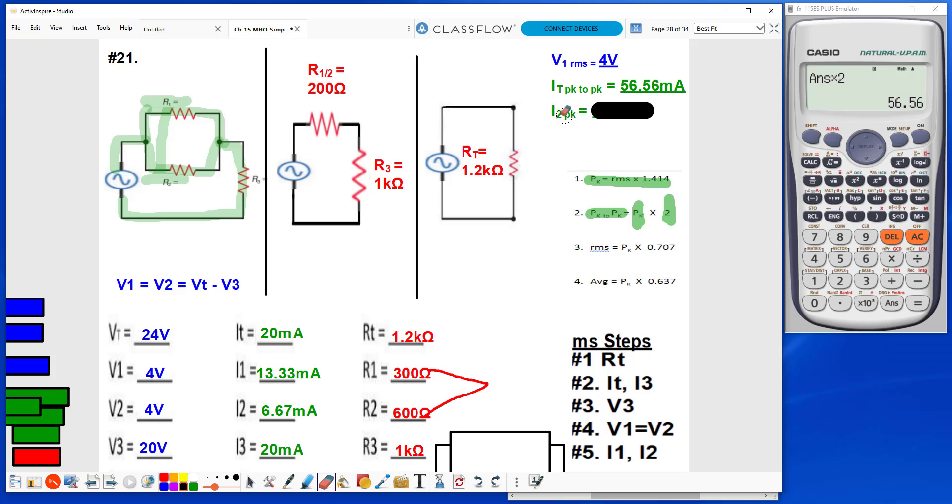Now I need my I2 peak. Here I have my I2 rms of 6.67. Take that times 1.414, and that gives me my I2 peak, 9.43 milliamps.